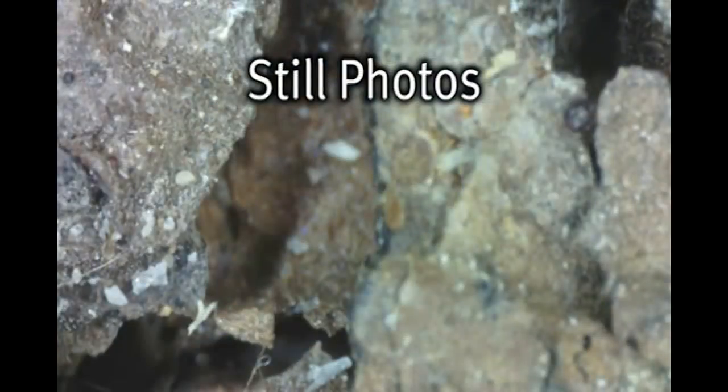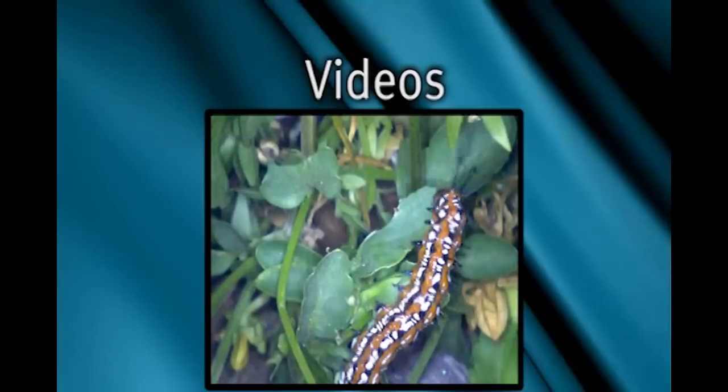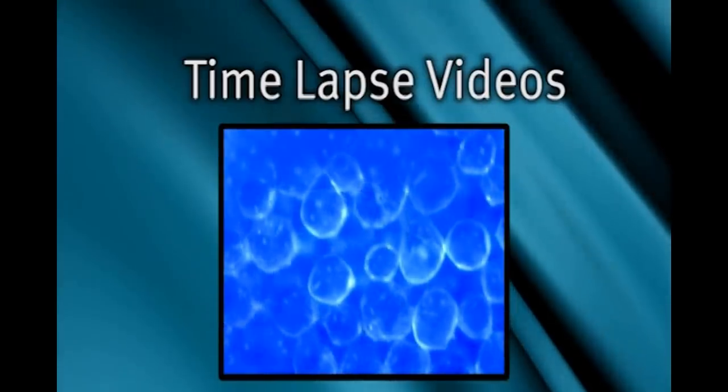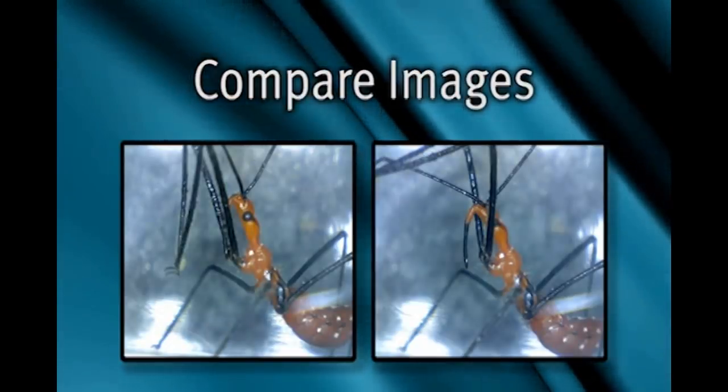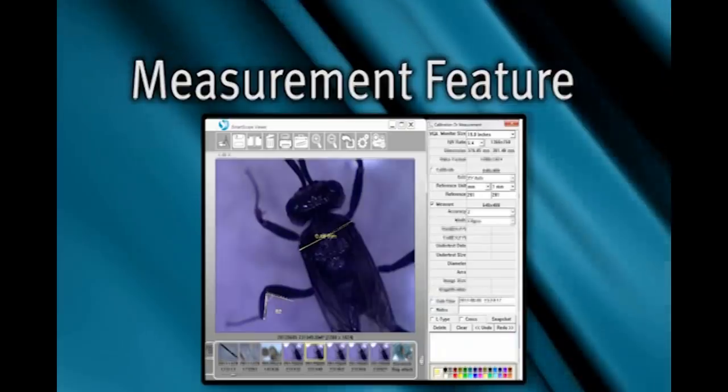With the SmartScope 5M, you can not only take still photos, but you can record videos, record time-lapse videos, compare two images side-by-side, and there's even a measurement feature.